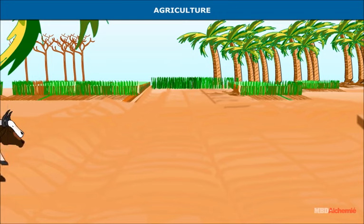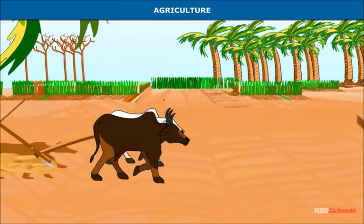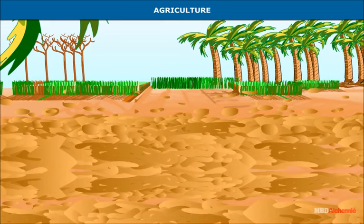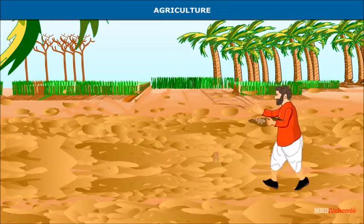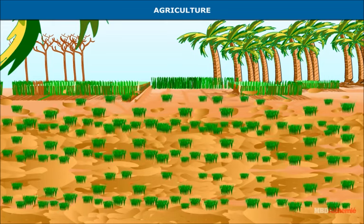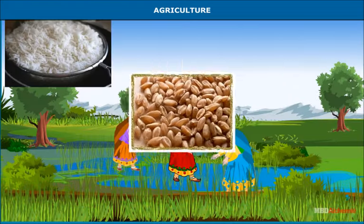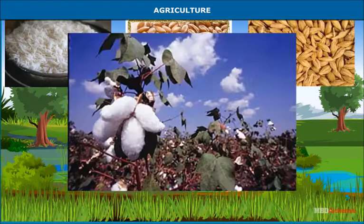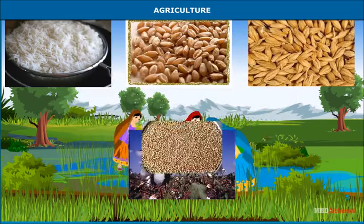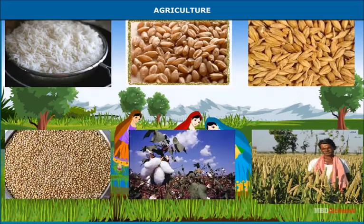Agriculture was the main source of income for the people. Two new methods were introduced which led to an increase in production: firstly, iron ploughs began to be used widely, and secondly, people began transplantation of paddy. Rice, wheat, barley, jowar, and cotton were the main crops. Farmers paid taxes to the kings both in cash as well as kind.